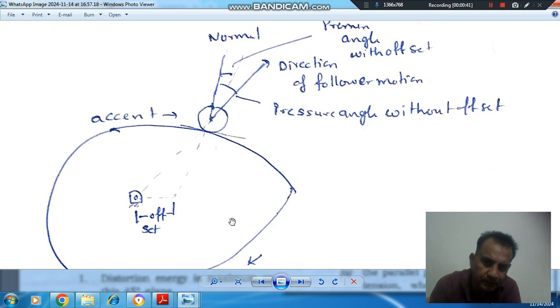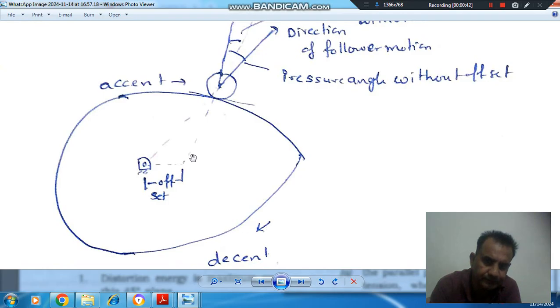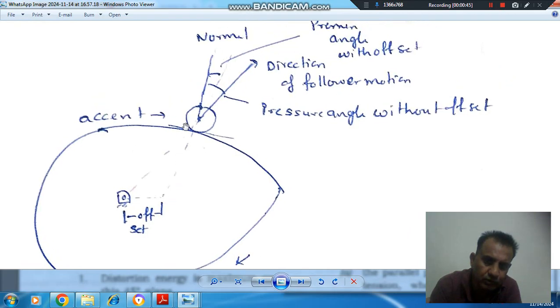First of all, what is pressure angle? This is the tangent to cam and this is normal to cam. When there is no offset, the follower will move in this direction.